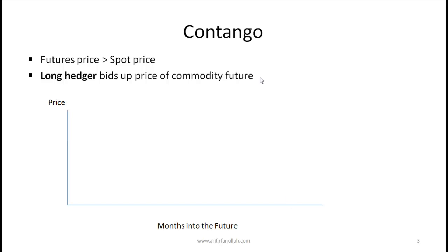First, let's understand the term contango. The key point to memorize is: if the futures price is greater than the spot price, then we have contango. Let's base this discussion on Figure 1 in the curriculum and I will draw this out for you.